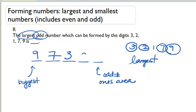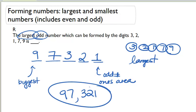The next biggest is 2. We are going to put a 2 right here. And our 1, which is an odd number, we can put right there. So the largest odd number that can be formed from those digits is 97,321.